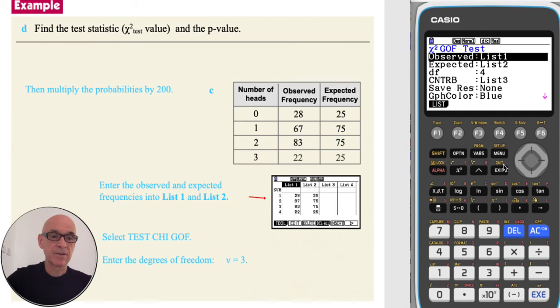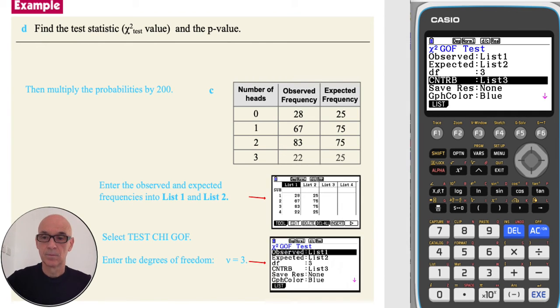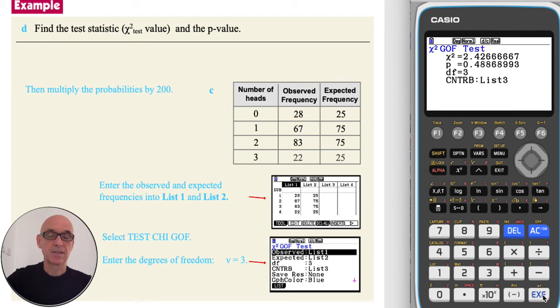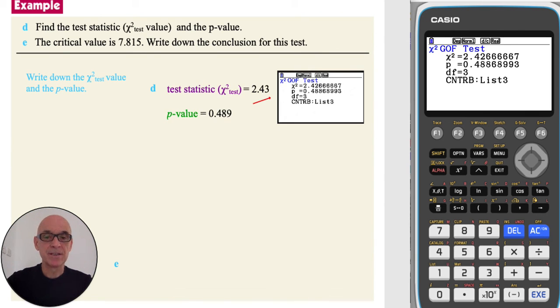Scrolling down and setting the number of degrees of freedom equal to 3, and pressing execute to perform the test. Writing down the chi-squared test statistic and the p-value, and rounding to three significant figures.